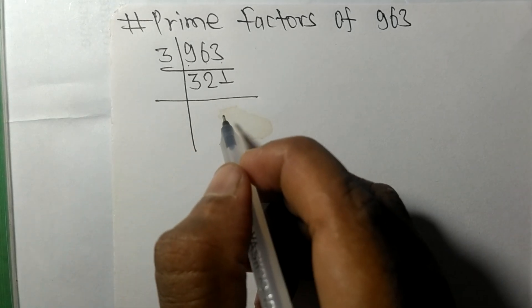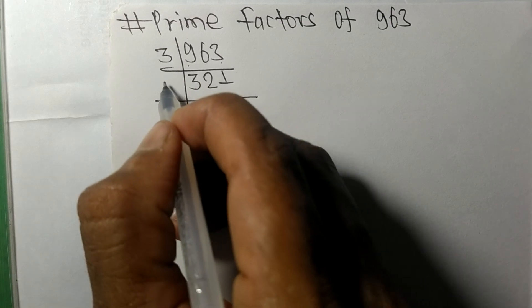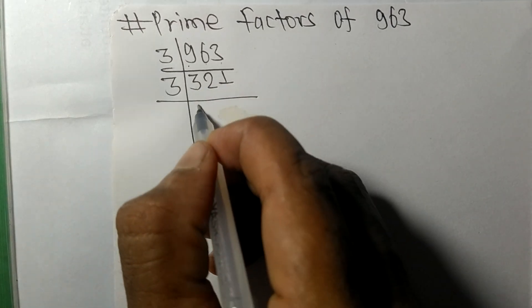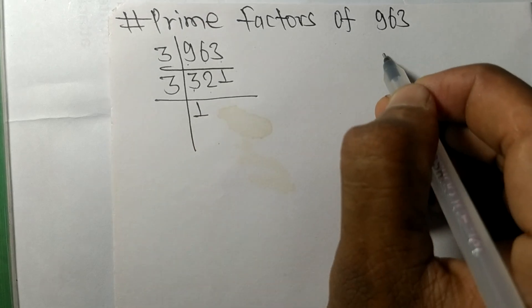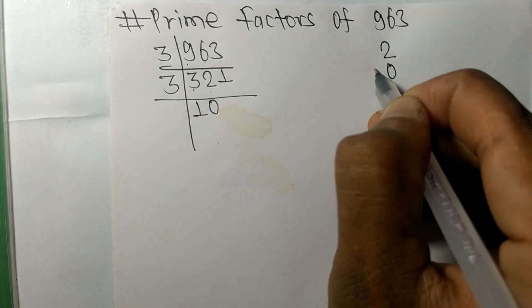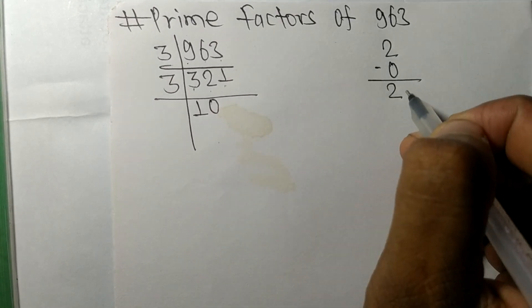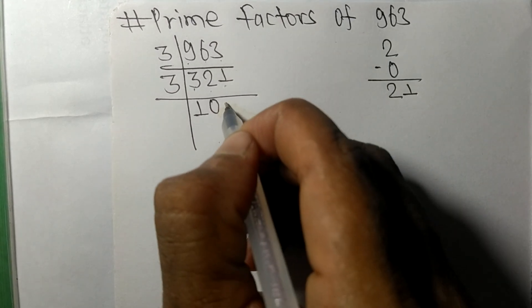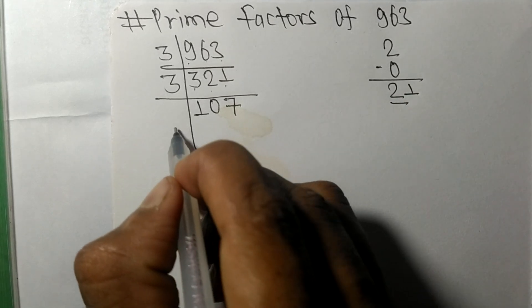got 321, which is exactly divisible by 3. 3 times 1 means 3, now we have 2. 3 times 0 means 0, and subtracting we get 2 and this one 21. 3 times 7 means 21, so now we got